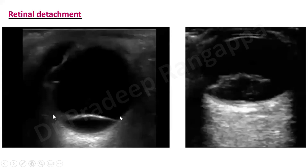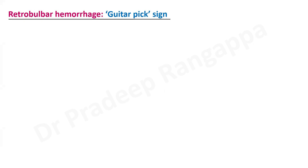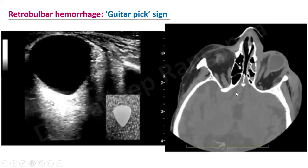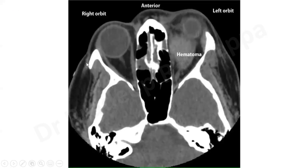With retinal detachment, you would see the detached retina as a flap within the vitreous humor. Retrobulbar hemorrhage is also something seen in trauma patients — there is a classic sign called the 'guitar pick sign.' You see a large hematoma in the shape of a guitar pick posterior to the globe, which is suggestive of retrobulbar hematoma.